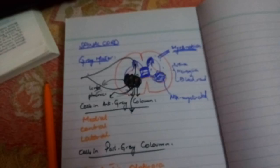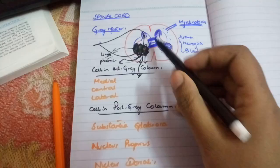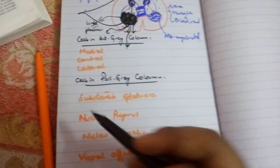Now we will look at the posterior gray column. This is the sensory area. The cells in the posterior gray column are also divided into four groups depending on which area they will receive signals from, because this is where sensory input arrives.